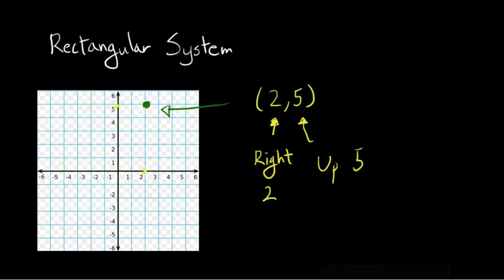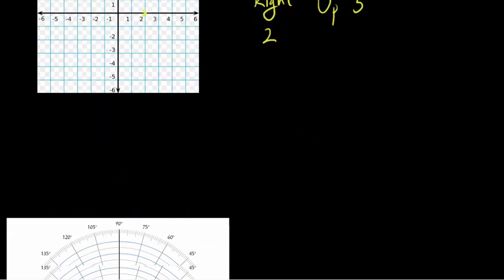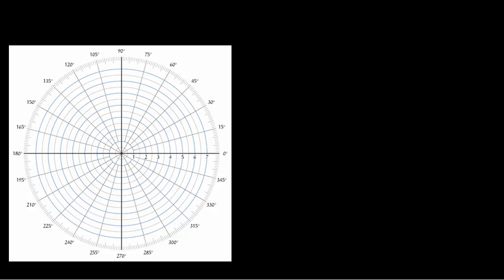But rectangular system is not the only way to plot a point, or it's not the only system that is very useful. Sometimes another coordinate system called polar coordinate system is more useful in some ways. When this thing is used, it's for radars, or when the angles and directed distances from the origin has important meaning in the solution. And I'll show you what.